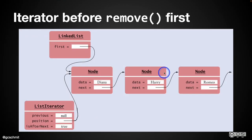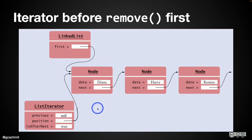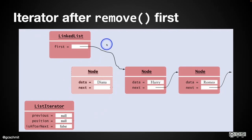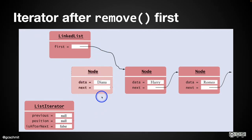Let's try to remove a node. Two cases again. Special case: calling remove when we're referring to the first node — we've already called next once and iterated over Diana, and now we call remove so Diana goes away. We just need the linked list to refer to the second node and update our iterator so position is null because we're now at the start of the list.